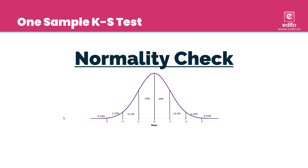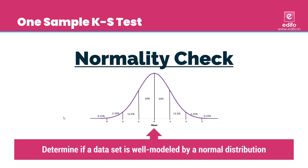If you want to test data using a parametric test, you first have to check whether the data is normally distributed. An assessment of normality is a prerequisite for many statistical tests because normality is an underlying assumption of all parametric tests. There are two main methods of assessing normality: the graphical method and the numerical (statistical) method.